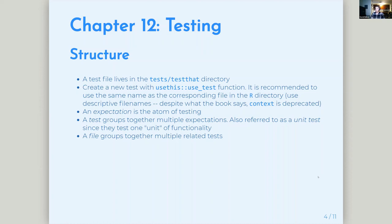There are three levels in the testthat hierarchy. The most basic thing is an expectation — they're all just expect_something(). It's basically saying 'I expect my code to do X.' The next level is the unit test — you group similar functionalities together. In testthat, the function is test_that(). You say test_that() with a name like 'test that this happens' and put all your related expectations inside that block. Then all these blocks live together in a file.